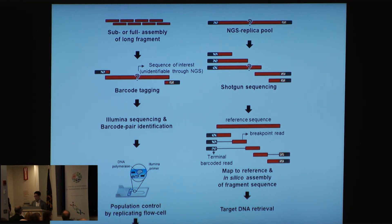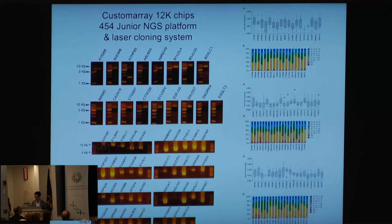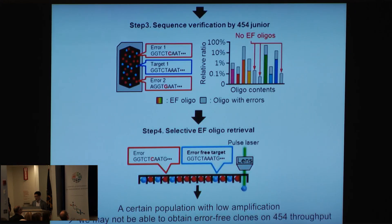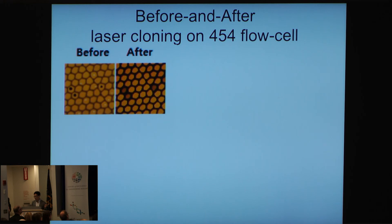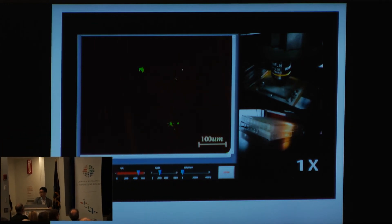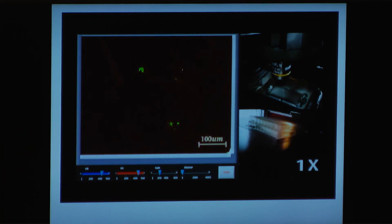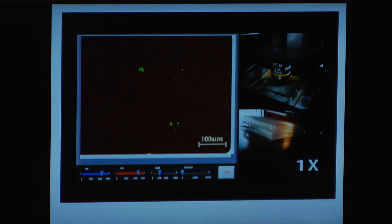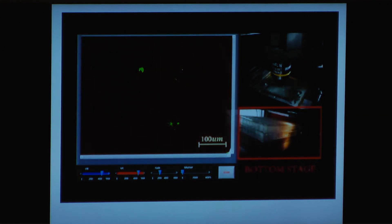Questioner: I was actually asking about the first approach with the beads. Speaker: In that case, we are using the 454 flow cell, not the Illumina flow cell. In the 454 flow cell, there is no cover — it's open. So we can directly access the beads. Sorry for the confusion.